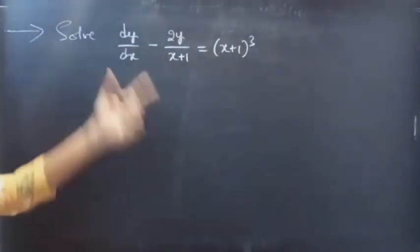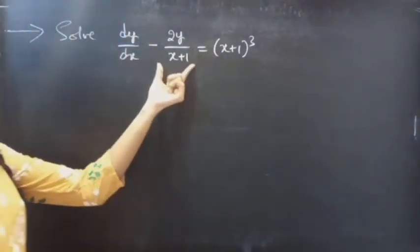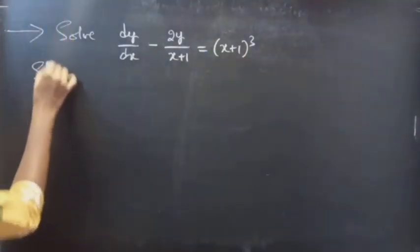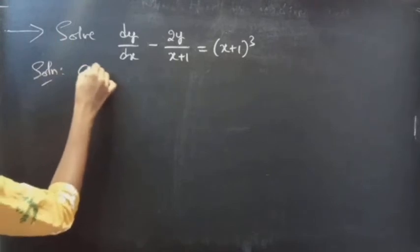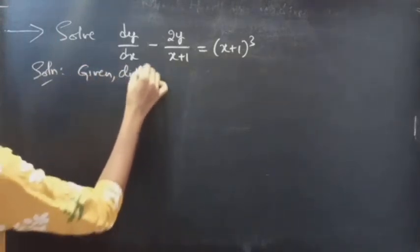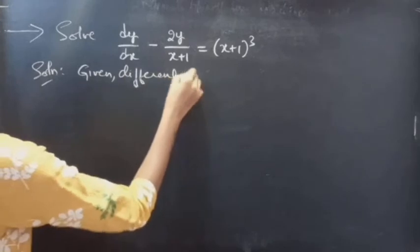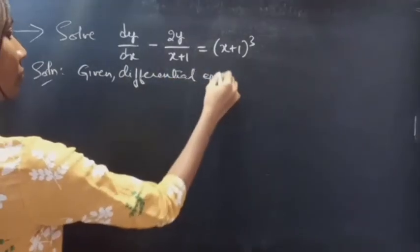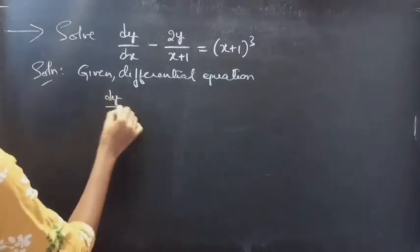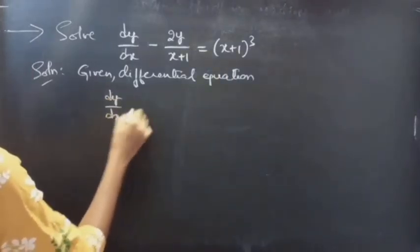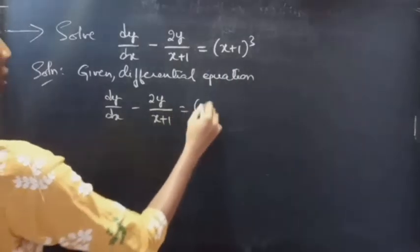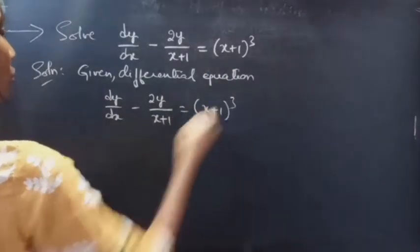Problem. Solve dy/dx minus 2y/(x+1) equals (x+1)³. Solution. Given differential equation: dy/dx minus 2y/(x+1) equals (x+1)³.